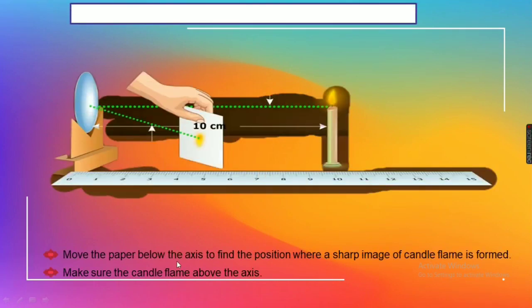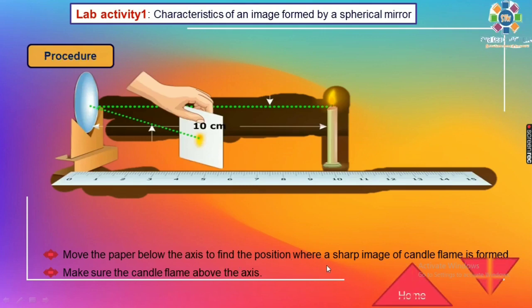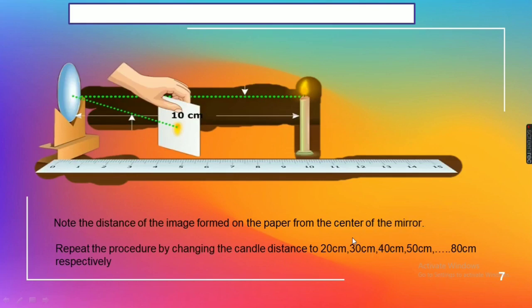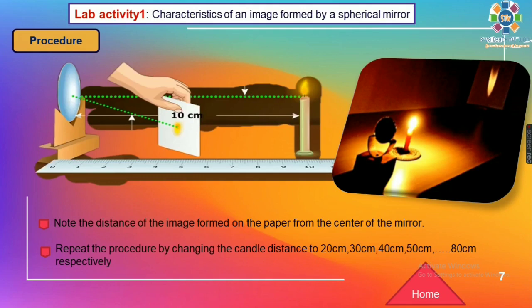In the next step, move the paper below the axis to find the position where a sharp image of the candle flame is formed. Make sure the candle flame is above the axis. You will observe that the image of the flame is above the principal axis of the mirror, while the screen is always below the principal axis. Note the distances of the image formed on the paper from the center of the mirror — we always measure from the hole at the center of the mirror. This distance from the mirror to the screen is called the image distance.